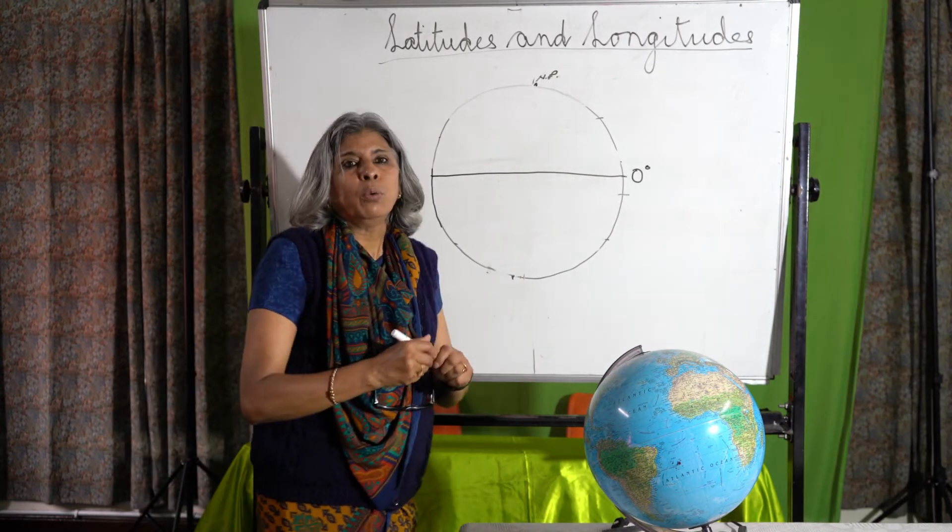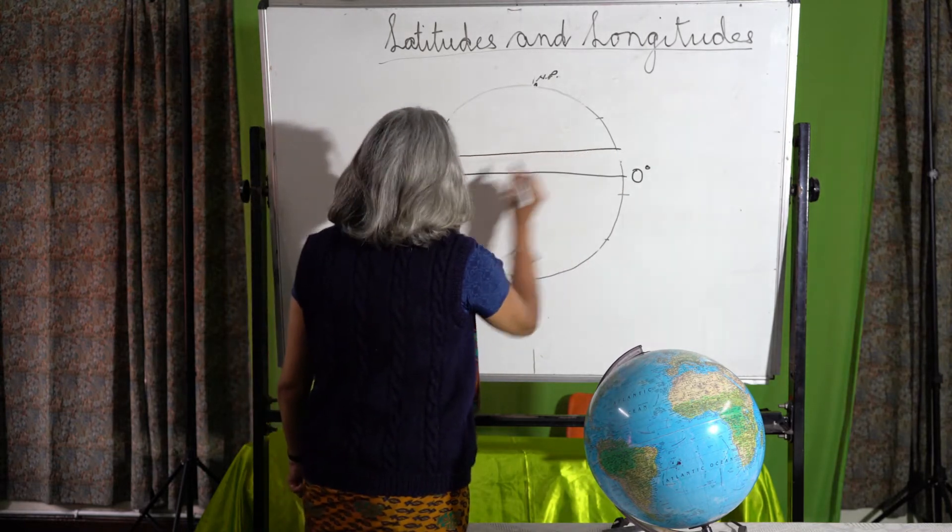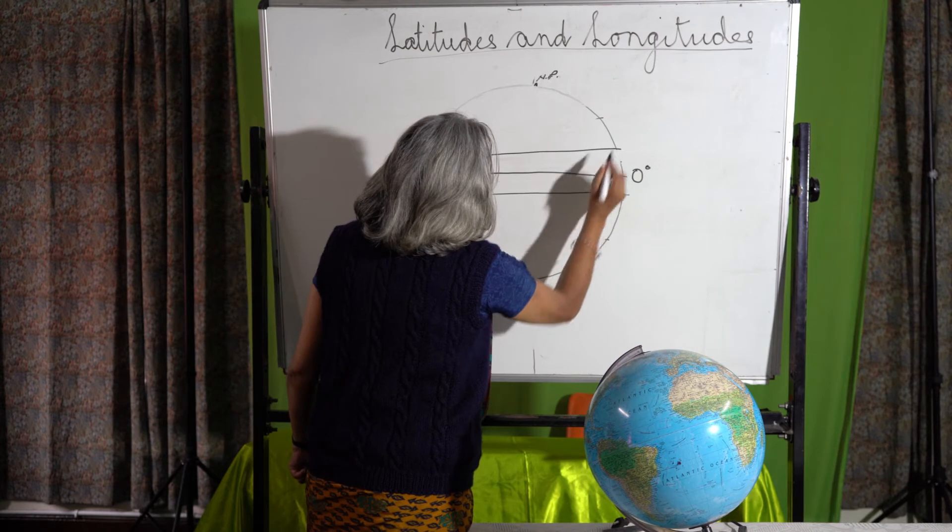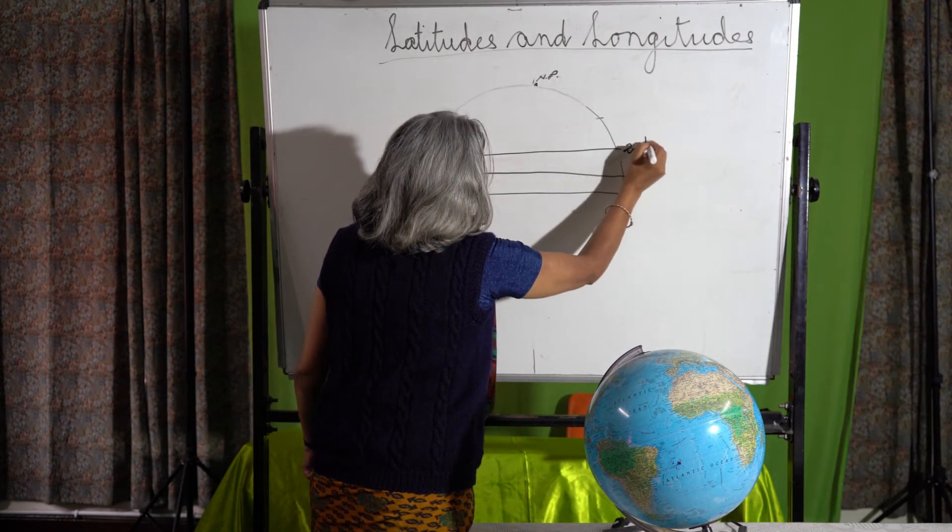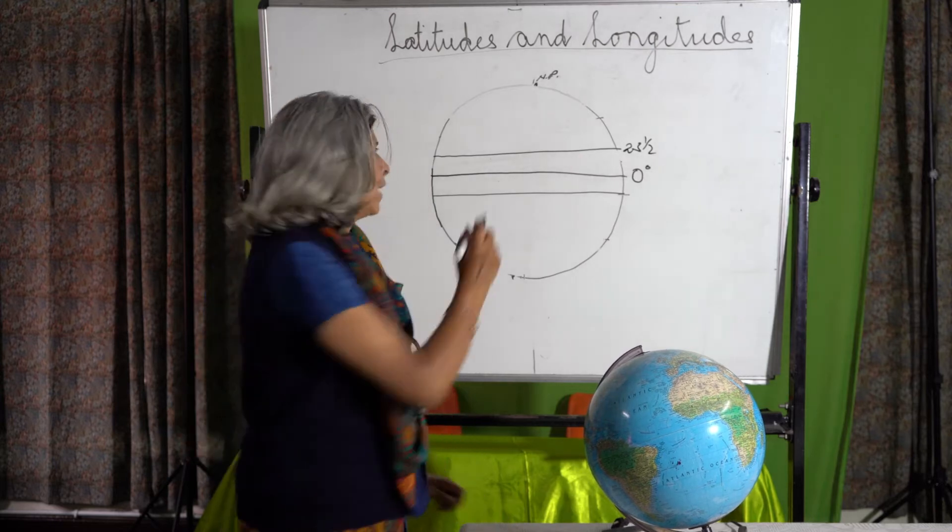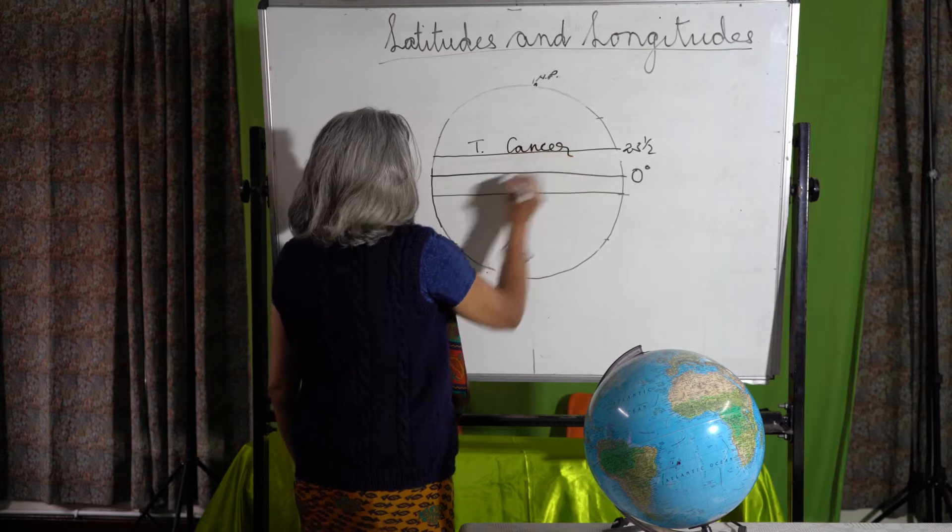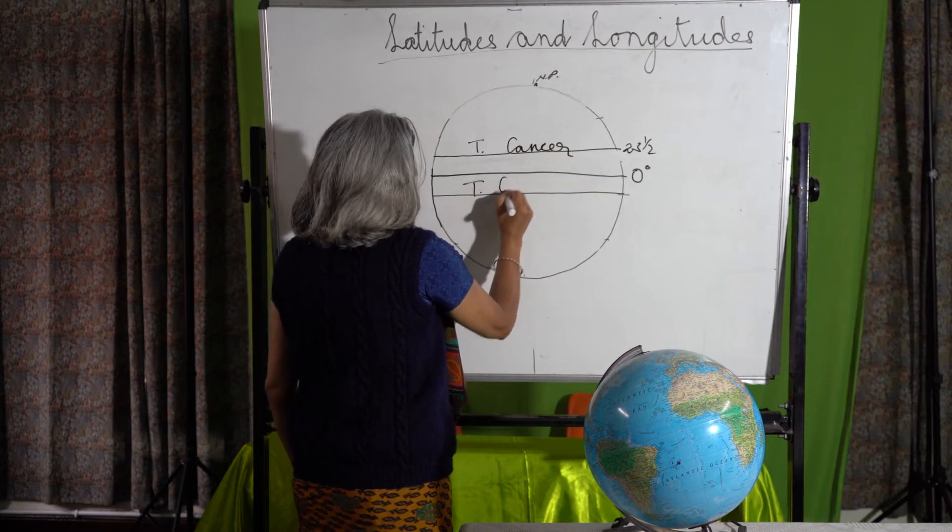After this, what do we find? We have 23.5 degrees north and 23.5 degrees south. These two lines of latitude are called the Tropic of Cancer and the Tropic of Capricorn.